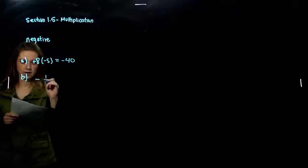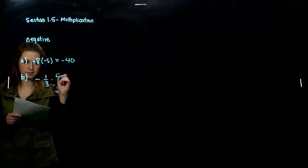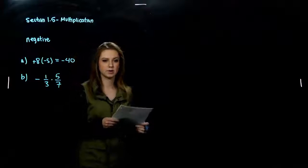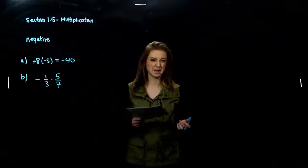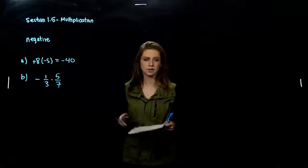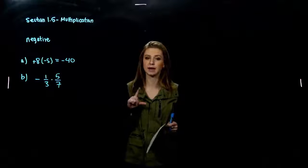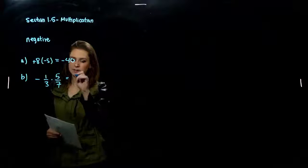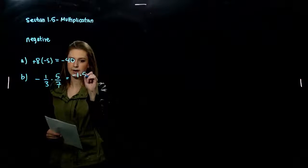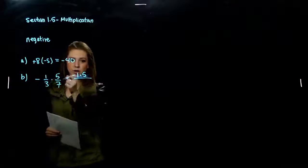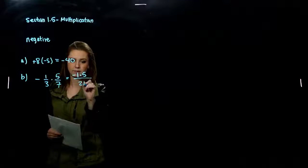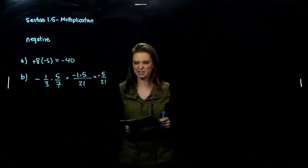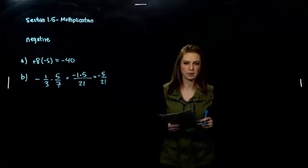What about for B? Negative one-third times five-sevenths. We can assign the negative to the top or to the bottom of the fraction, just not to both, because then it would become positive. So assigning it to the top: negative 1 times 5 multiplying straight across the top, straight across the bottom, gives us negative 5 over 21. And we always want to ask, can I simplify that at all? Can't break it down any farther.